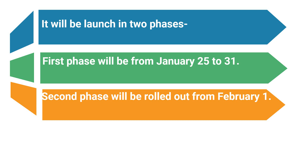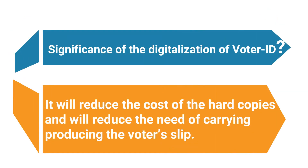The second phase will roll out from 1st February, in which general voters will get the voter ID. As for the significance of digitalization, the electronic card will help the Election Commission save printing and distributing costs of hard copies, and secondly, this would do away with the need of carrying or producing the voter's slip on the day of voting.